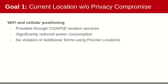We accomplish our first goal by utilizing Wi-Fi and cellular positioning provided by coarse location services on smartphones. This offers significantly reduced power consumption over a more precise GPS query, and further, it does not violate GAEN's additional terms that prohibit using precise locations.